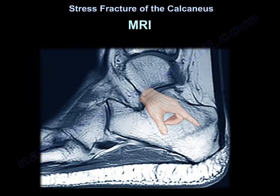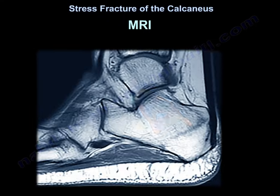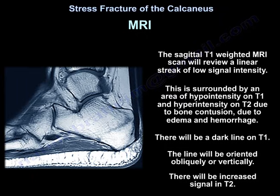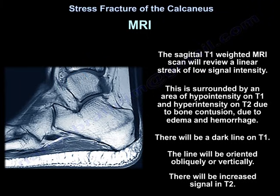On MRI, the sagittal T1-weighted scan will reveal a linear streak of low signal intensity. This is surrounded by an area of hypointensity on T1 and hyperintensity on T2, due to bone contusion, edema, and hemorrhage. There will be a dark line on T1, oriented obliquely or vertically, and increased signal on T2.